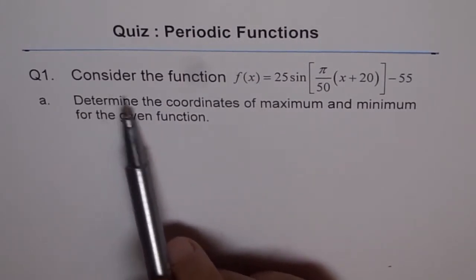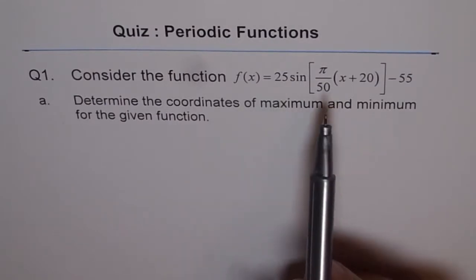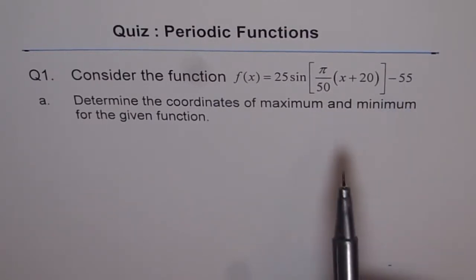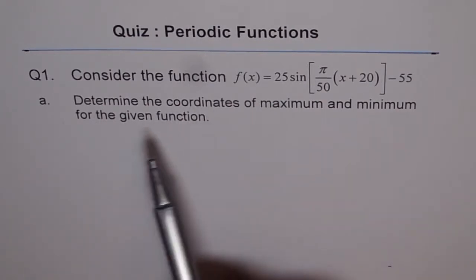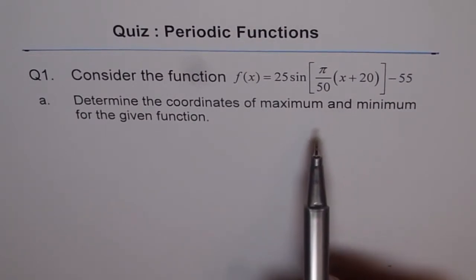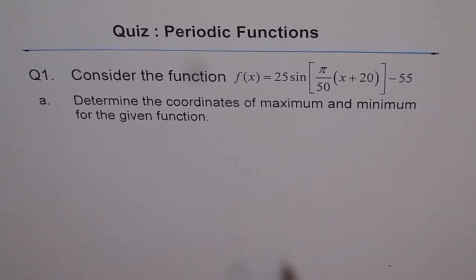Now here consider the function f(x) is a sine function with amplitude of 25 and k factor pi by 50, phase shift of 20 units to the left and 55 units down. Determine the coordinates of maximum and minimum for the given function. I will give you a solution of this problem in one way and I would like you to attempt and get this solution alternately also. So that will give you a very sound base on understanding periodic functions.